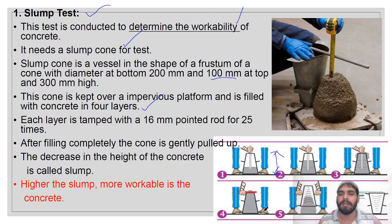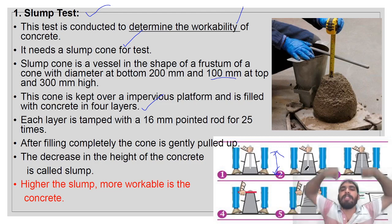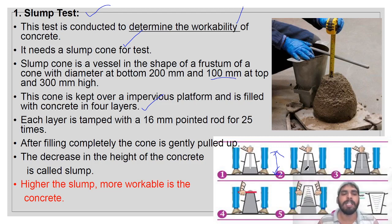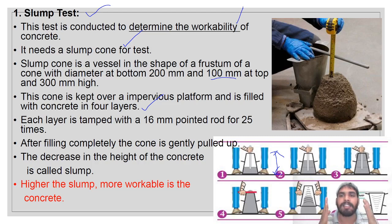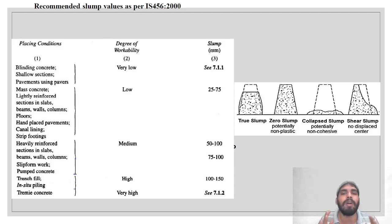After compacting the four layers, pull the slump cone upward. A frustum shape is formed by the concrete. You then measure the height of the settled concrete — this is known as the slump value. Higher the slump value, more the workability.